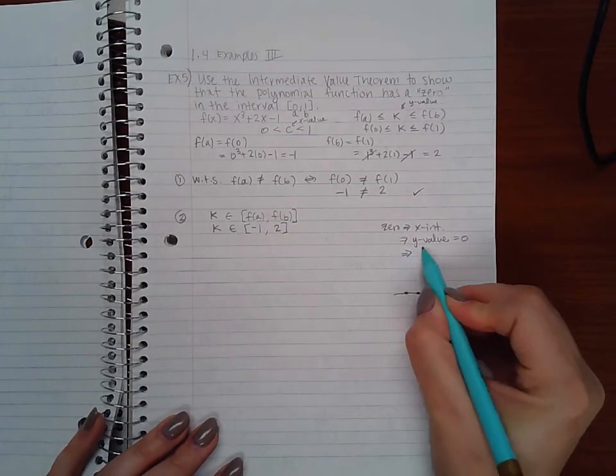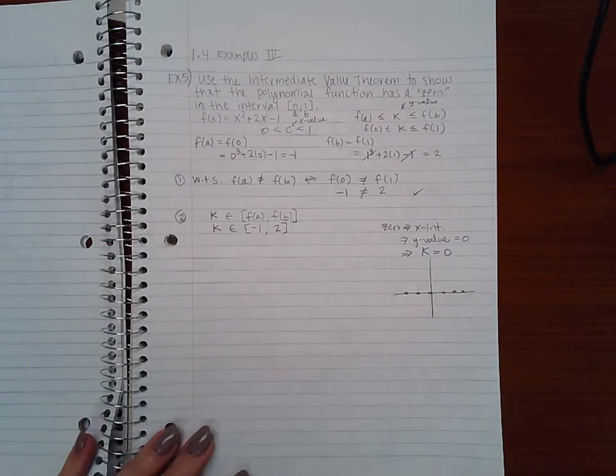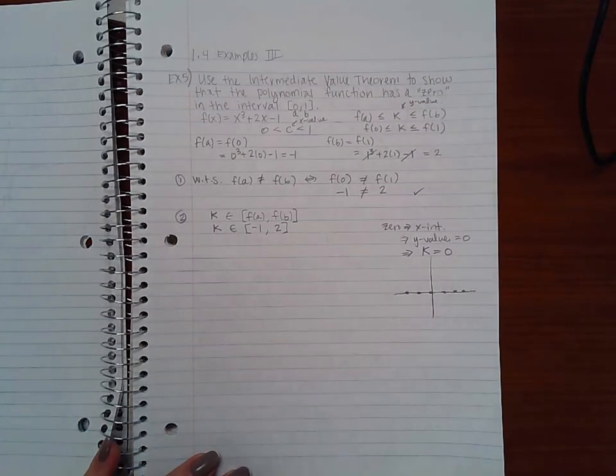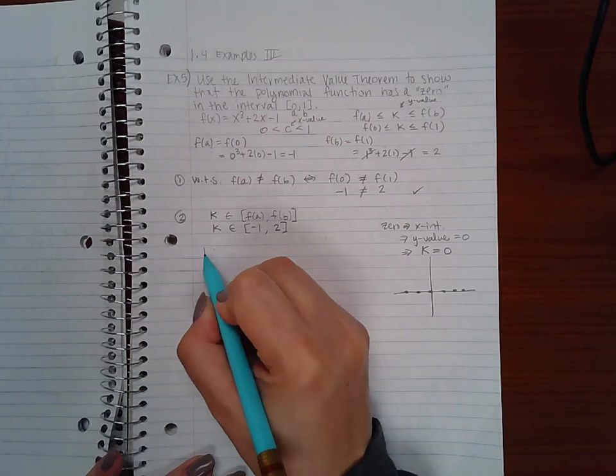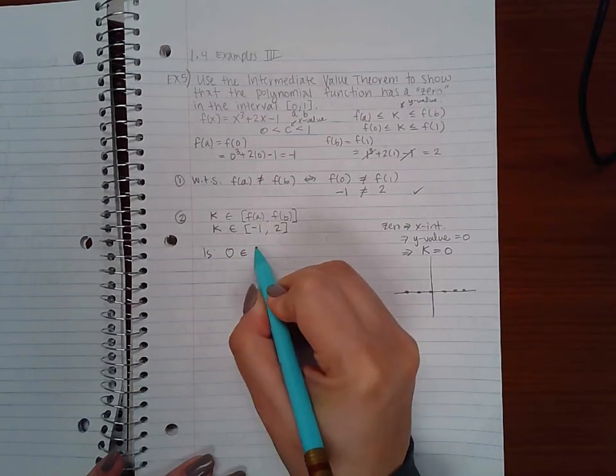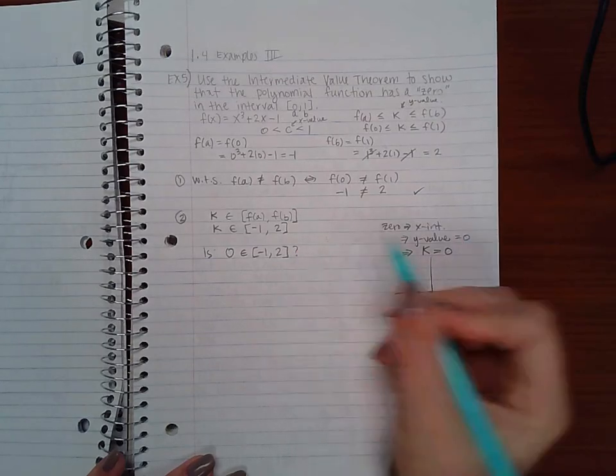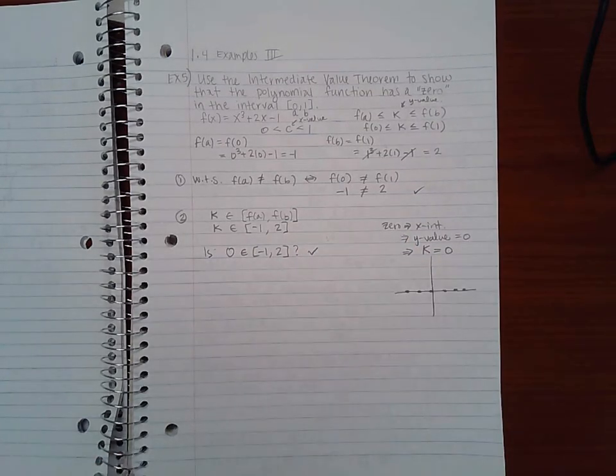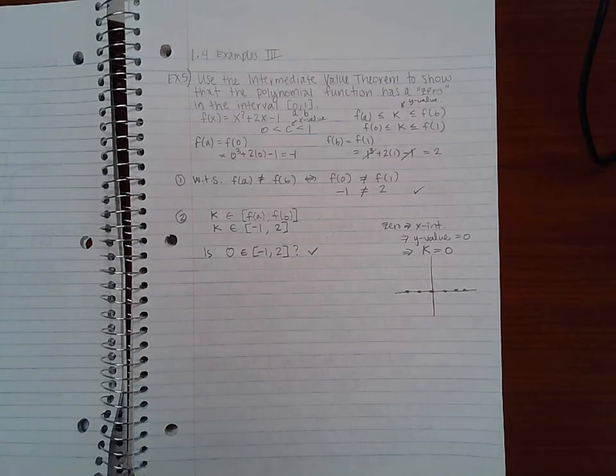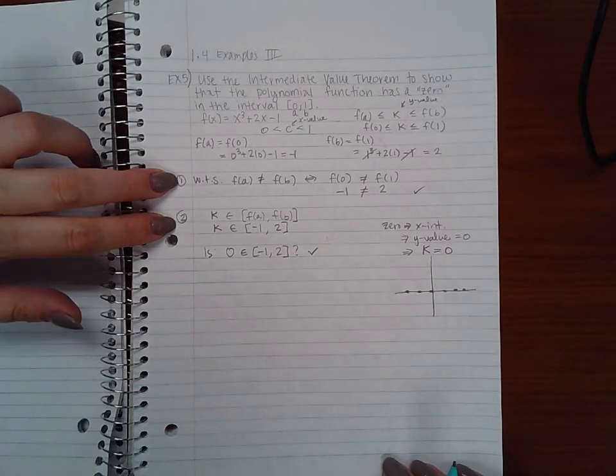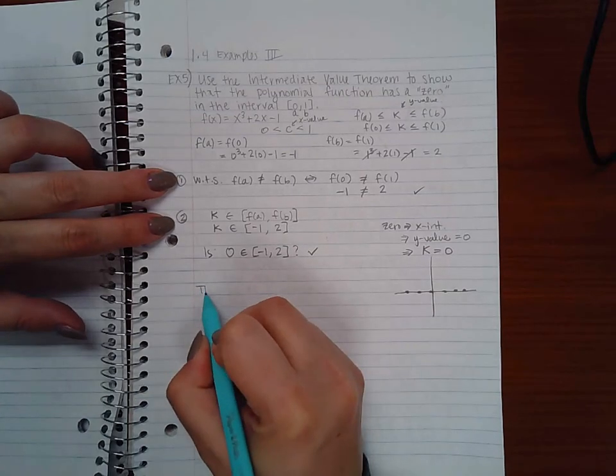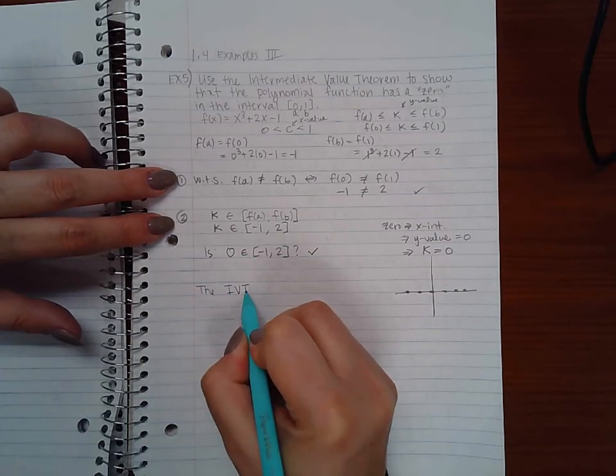I don't know where the x-intercept is, which one of these dots it is if any of these, but I do know that the y value for every single one of those points is 0. So that means that my k value is 0. That's what I'm trying to find here. So then the question is: is 0 in between negative 1 and 2? And it is. Therefore the second criteria of the Intermediate Value Theorem holds.